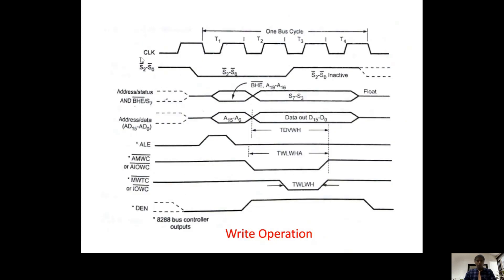For the write operation, clock is essential from T1 to T4. The multiplexed address, status, and BHE bar/S7 lines are present; before T1 they are multiplexed, during T1 they separate into address and BHE bar, and after T1 they act as status lines. AD0 to AD15 are multiplexed before T1, separate into address during T1, and act as data lines D0 to D15 from T2 to T4. ALE should be high during T1 and low from T2 to T4.